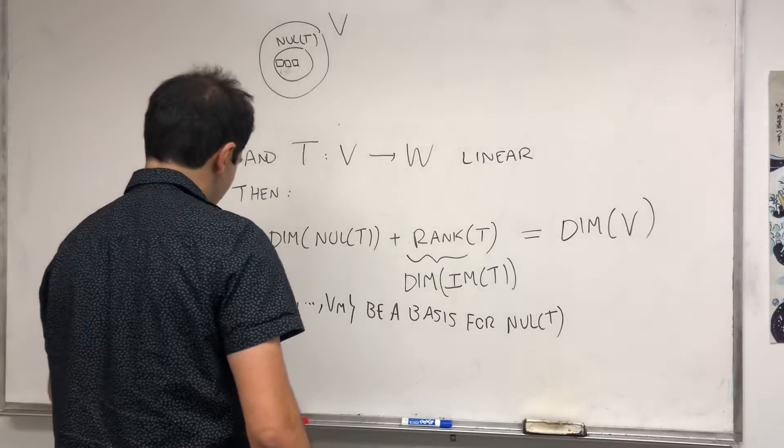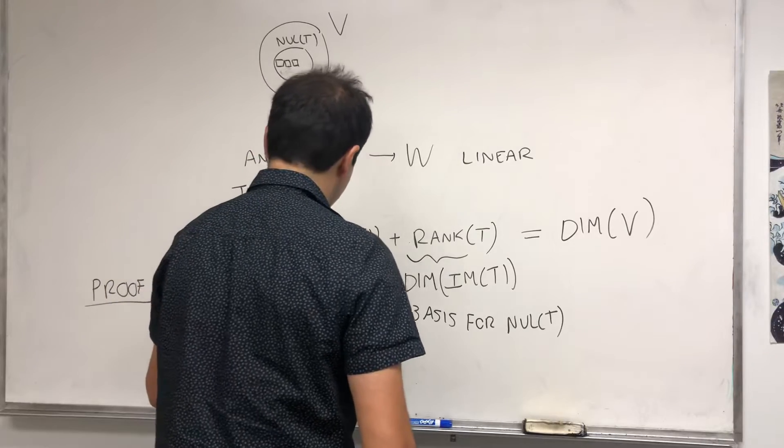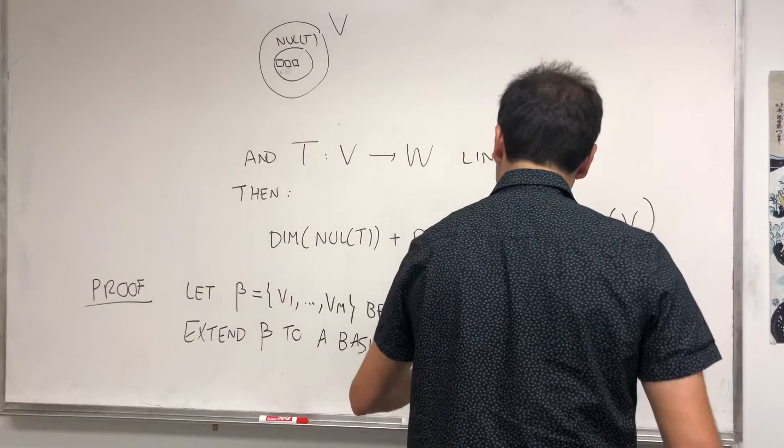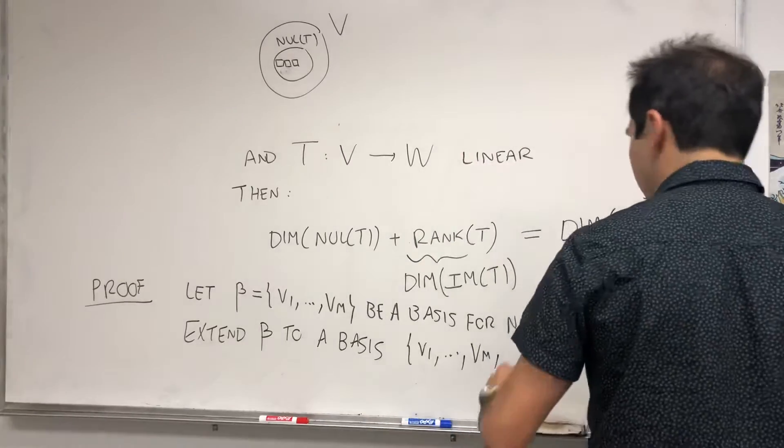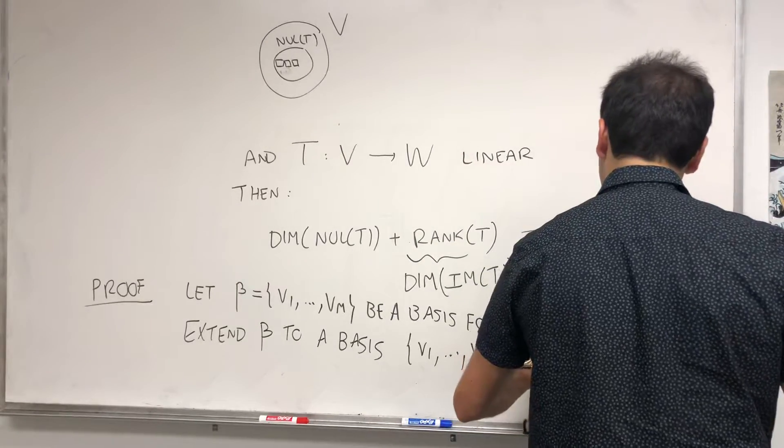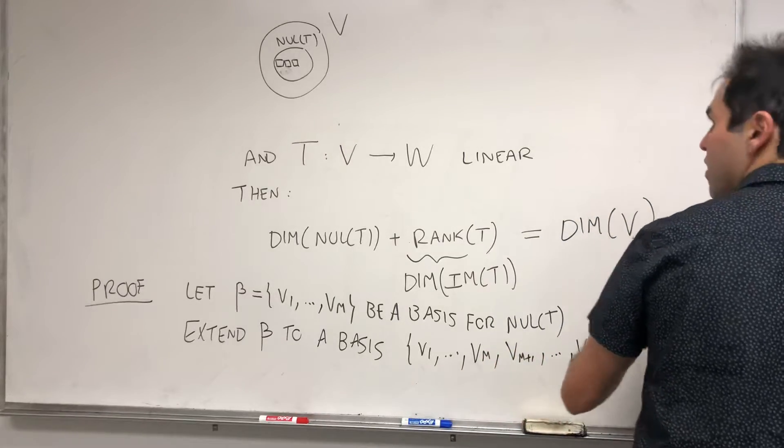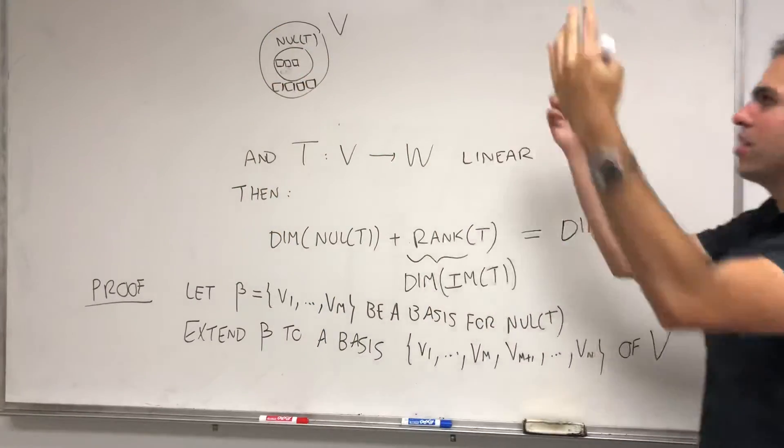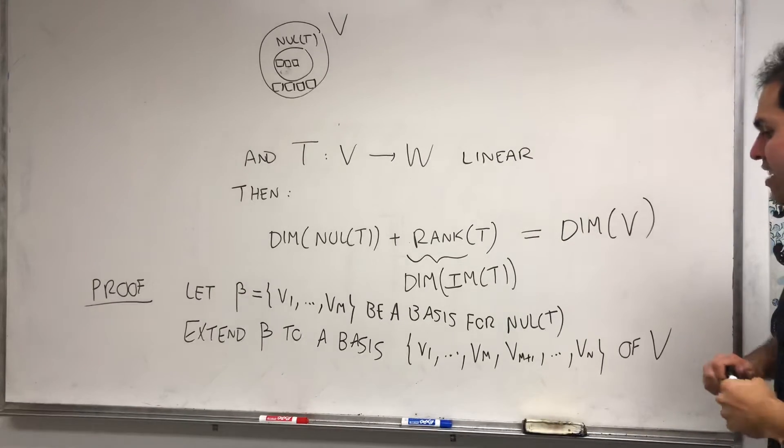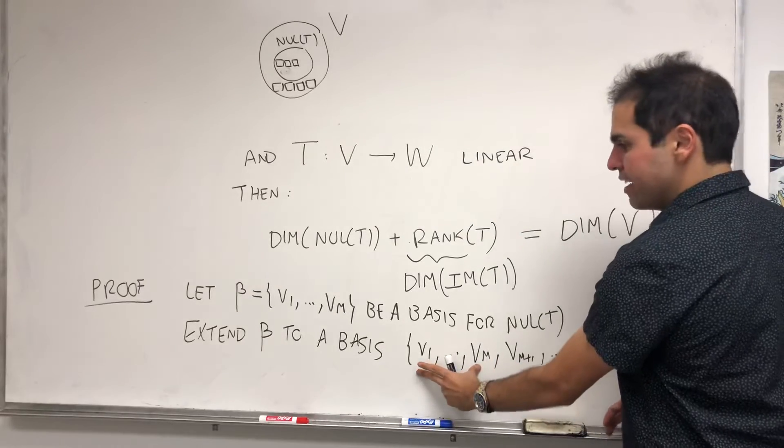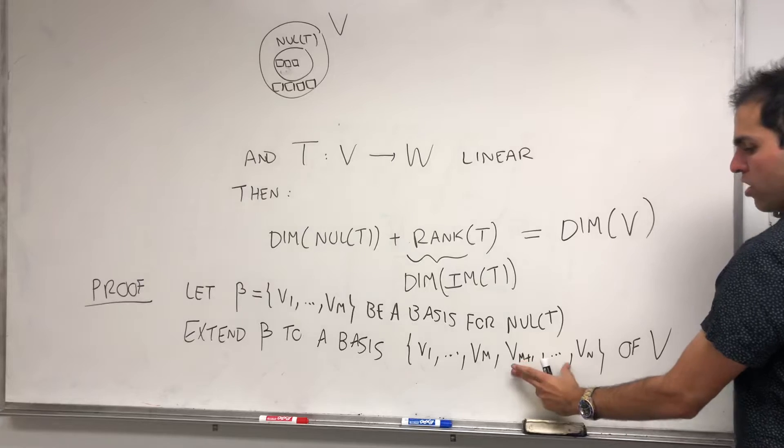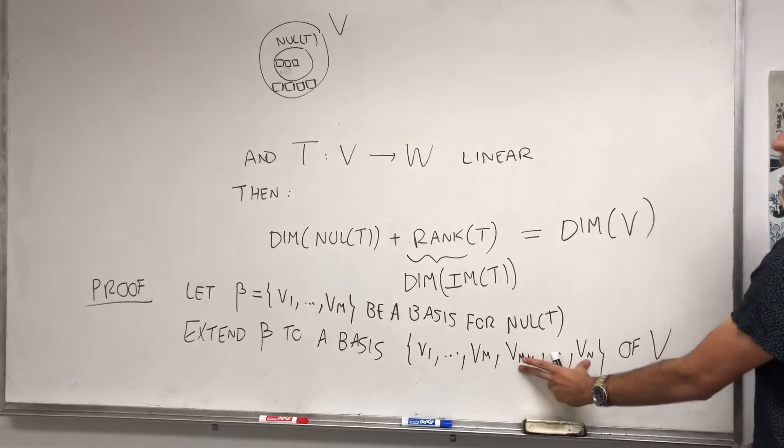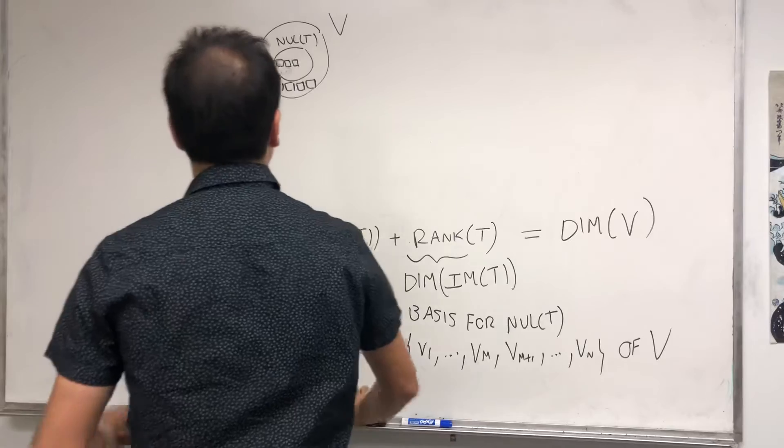So extend beta to a basis V1 up to Vm, so the same vectors, but more than that, so Vm+1 up to Vn. So we start with those V1 up to Vm's, and then we just add vectors until we get a whole basis. And all that's enough to show, so m is the dimension of the null space. It's just enough to show that somehow the dimension of, or like the rank of T is just n minus m. And the way we do this is just claim...